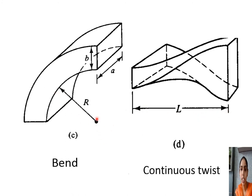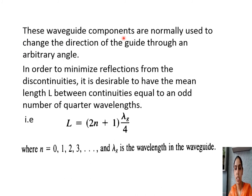Capital R represents the radius of curvature of the bend, and A and B are the dimensions of the waveguide. All these waveguide components are normally used to change the direction of the guide through an arbitrary angle. The mean length L must be equal to an odd number of quarter wavelengths, i.e., (2n+1) × (λg/4), where n = 0, 1, 2, 3, etc., and λg is the guide wavelength.